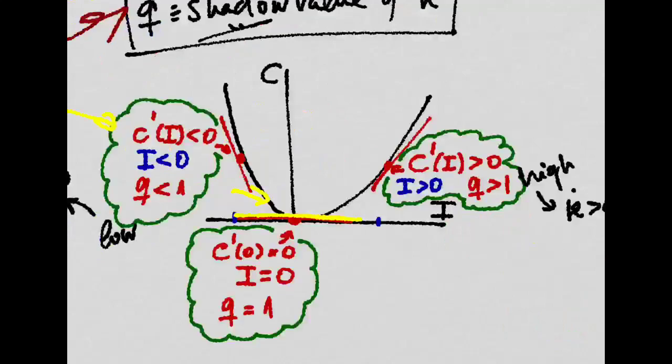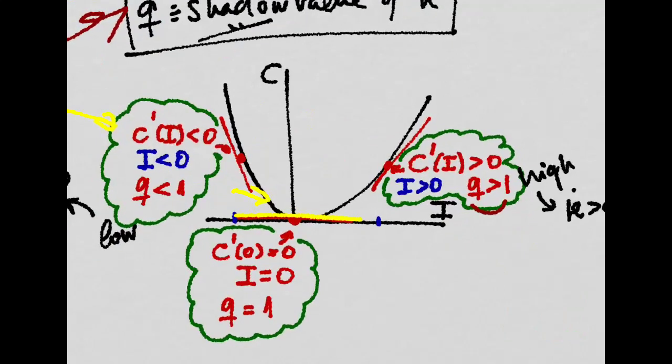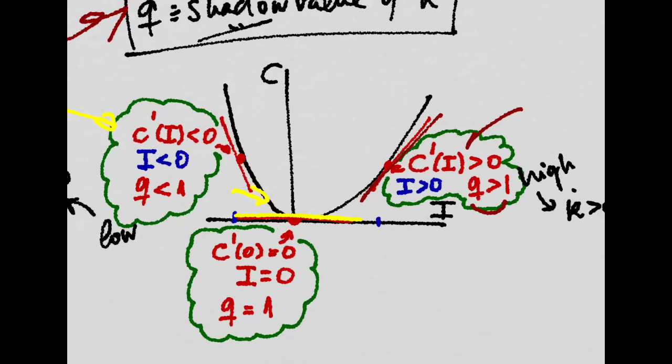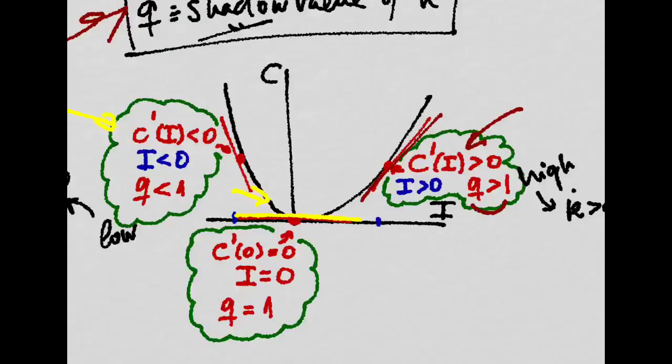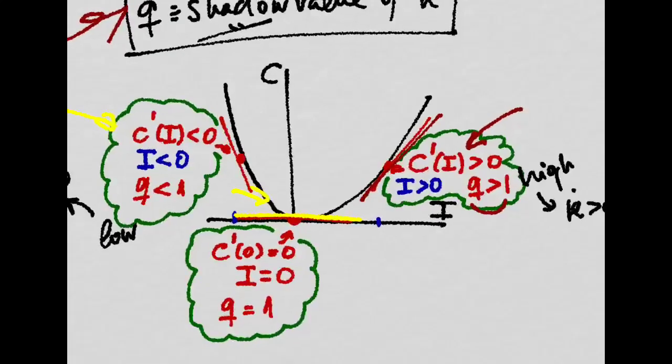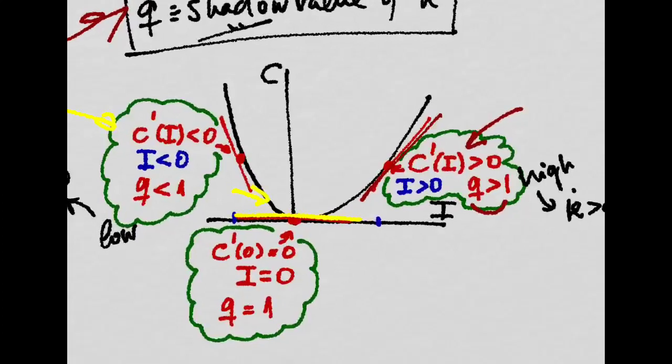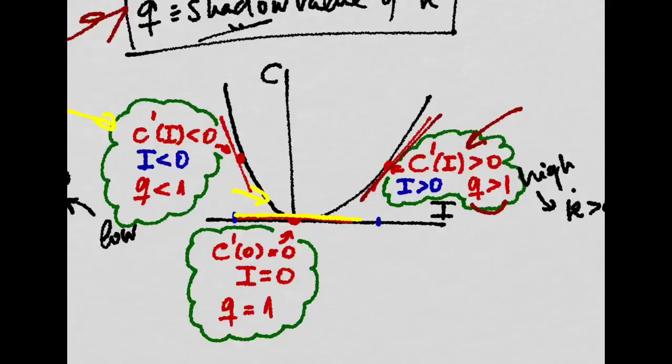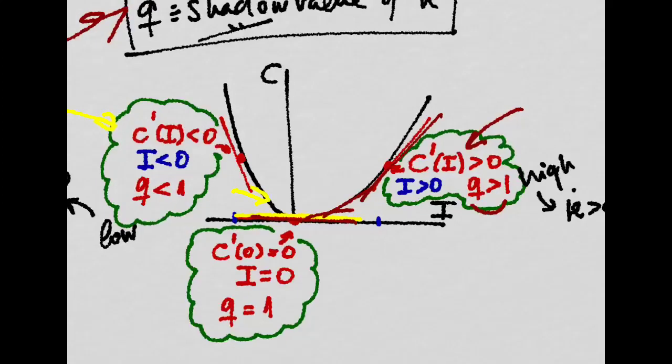For example, in the case where Q is greater than one, that is when the slope is positive and we have a marginal cost greater than zero, we will have increasing capital stock. But firms will have the incentive to invest less and less until they minimize costs at the point where Q is equal to one.